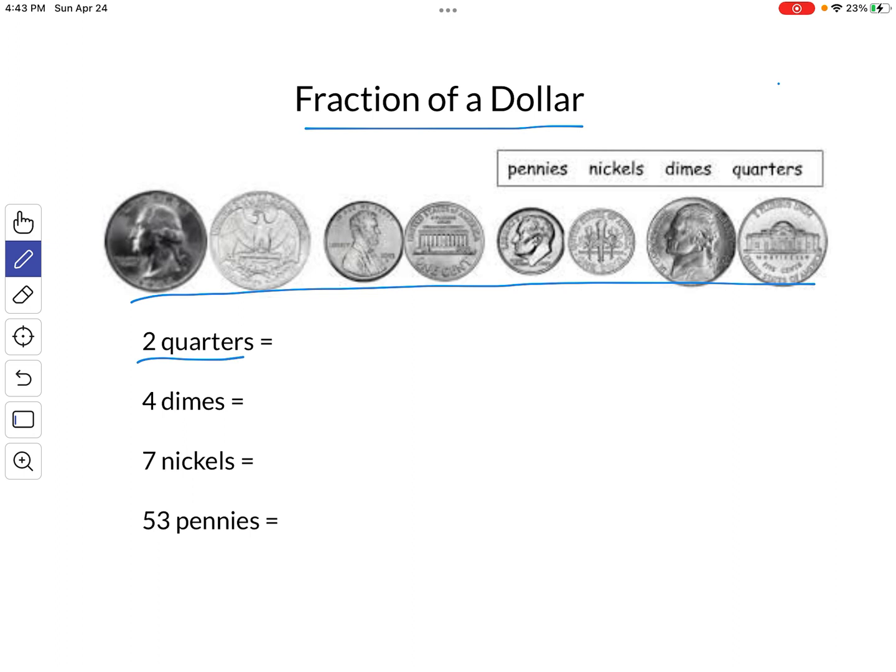Two quarters. We've got two quarters right here. We can call that two quarters out of how many quarters that make a dollar? Four quarters. So the answer to a fraction of a dollar for two quarters would be either two-fourths or how much are the quarters worth? They're worth 50 cents. How many cents are there in a dollar? A hundred. And so it's 50 cents out of a hundred cents that those two quarters are.